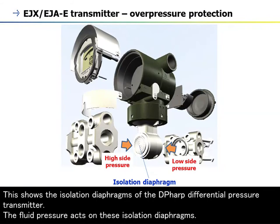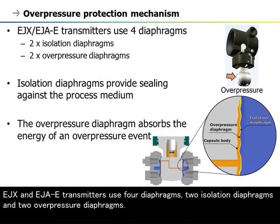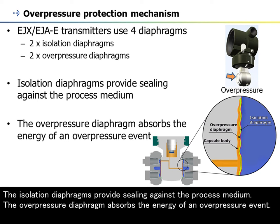This shows the isolation diaphragms of the DP-HARP differential pressure transmitter. The fluid pressure acts on these isolation diaphragms. EJX and EJAE transmitters use four diaphragms: two isolation diaphragms and two overpressure diaphragms. The isolation diaphragms provide sealing against the process medium, while the overpressure diaphragm absorbs the energy of an overpressure event.